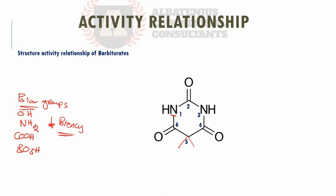Short chains at carbon five result in long-acting barbiturates, while long chains result in short-acting barbiturates. It is an inverse relationship: short chain means long acting, long chain means short acting.